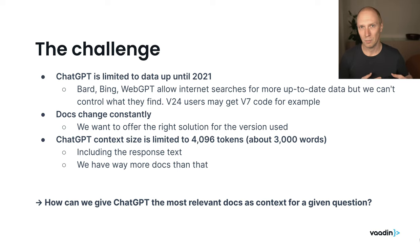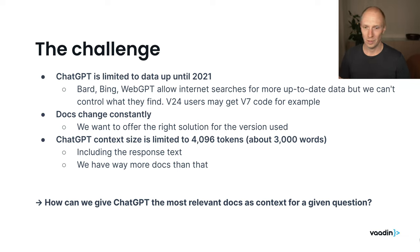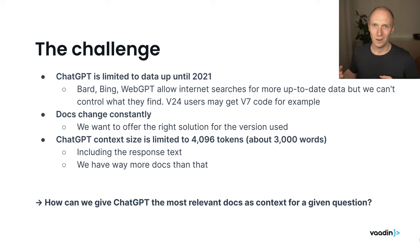Our documentation keeps getting updated all the time, so we'd want to always be able to give the latest documentation as input. Finally, there's a limitation on how much context we can feed into ChatGPT — right now that limit is about 4,000 tokens, or around 3,000 words, and that needs to include the response text too. So we can't feed in all the documentation; we need to figure out the most relevant pieces to give ChatGPT to answer a given question.